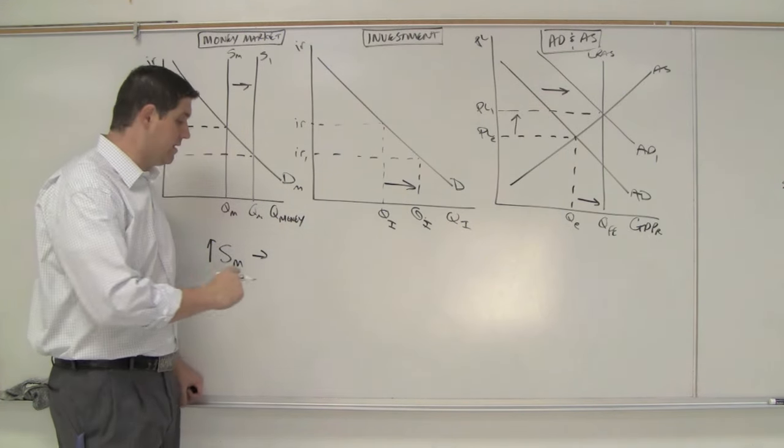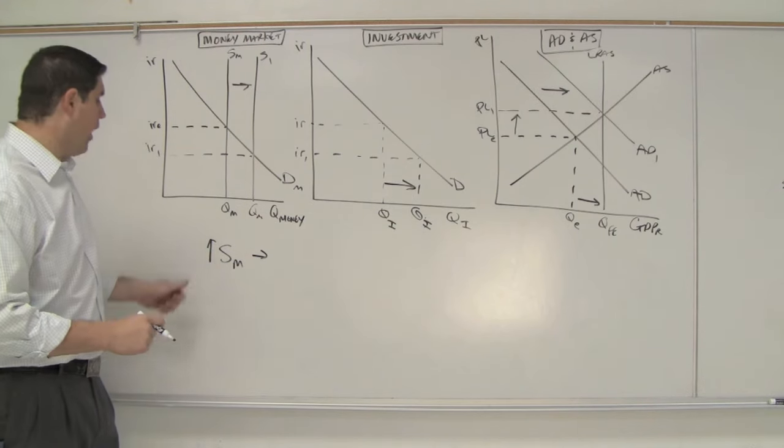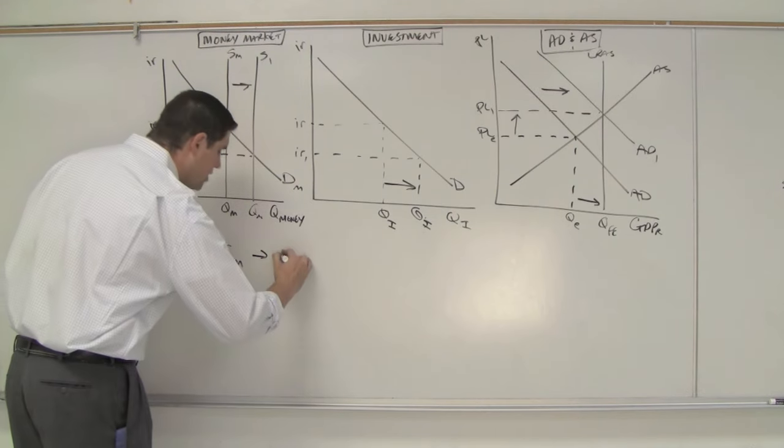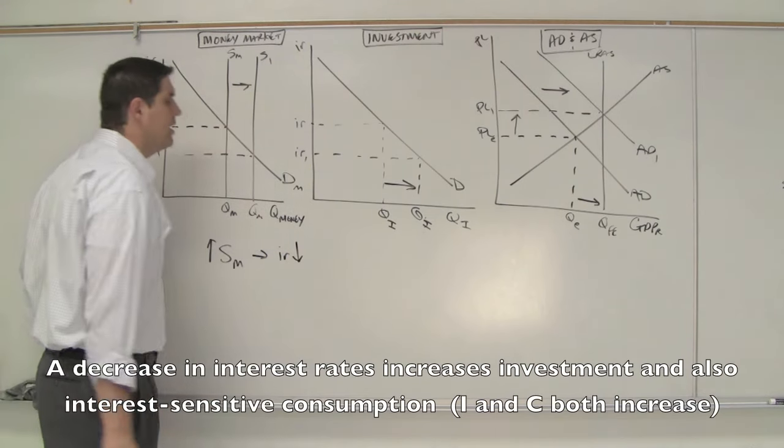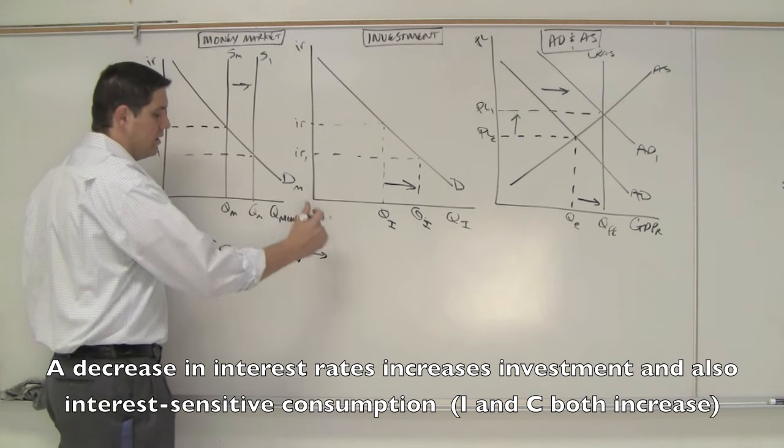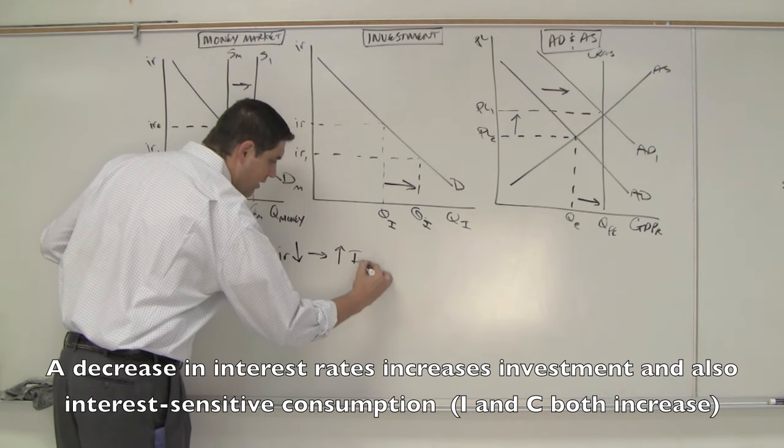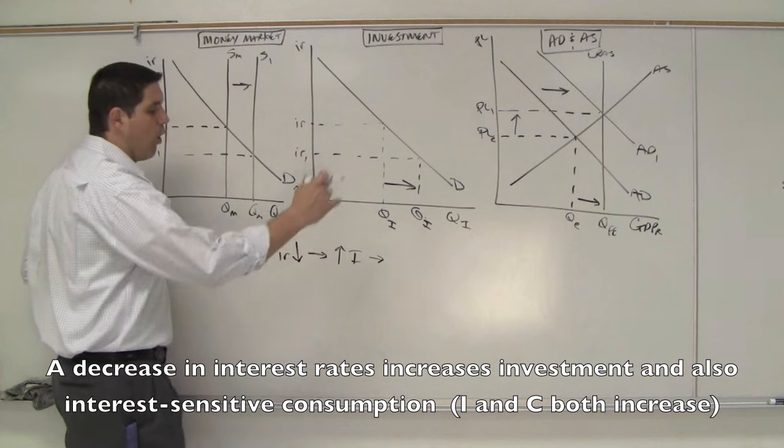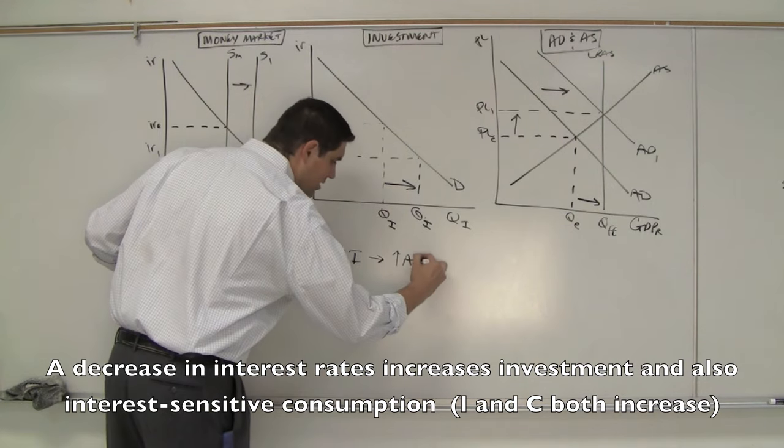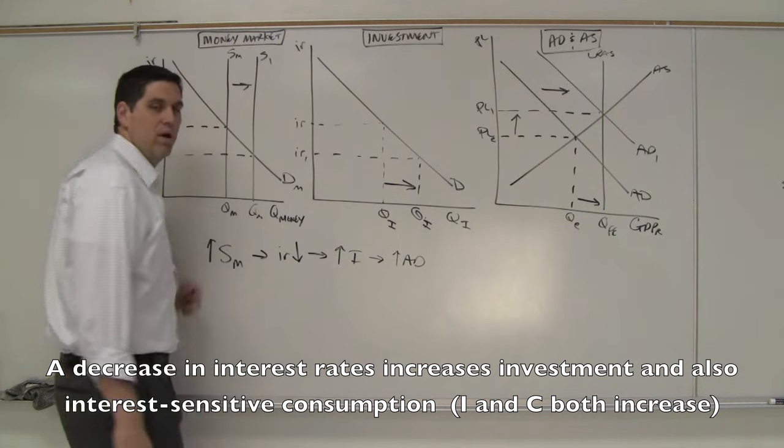So an increase in money supply led to a decrease in interest rates. A decrease in interest rates led to an increase in investment. And more investment increased aggregate demand, because investment is a component of aggregate demand.